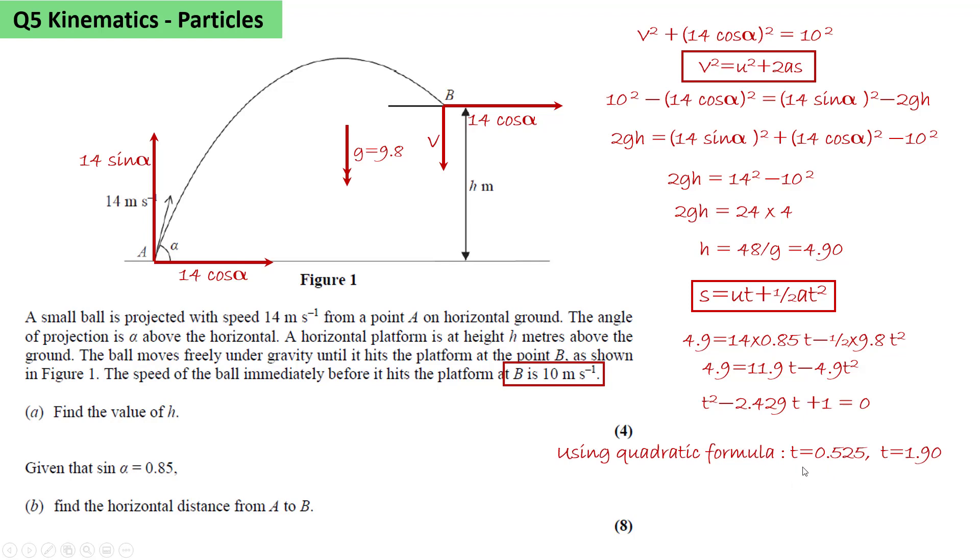T equals 0.525 and T equals 1.9. So the 0.525 will be on the way up when it reaches a height of 4.9, and the 1.9 will be on the way down at B. So it reaches B in T equals 1.9 seconds.